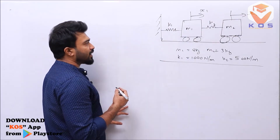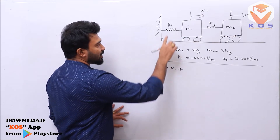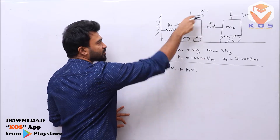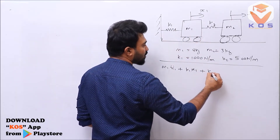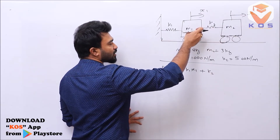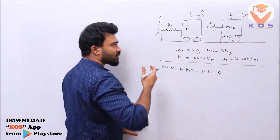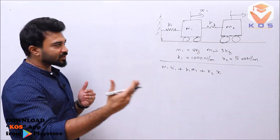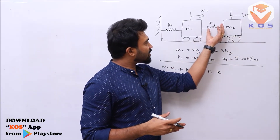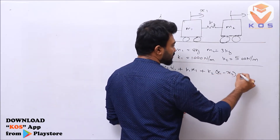m1 is linked to two springs k1 and k2. So the equation for m1 is: m1 x1 double dot plus k1 x1 plus k2 times (x1 minus x2) is equal to 0.